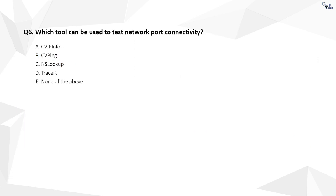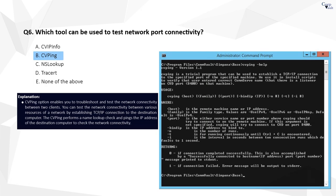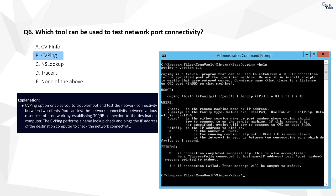Question 6. The correct answer is B. The CV ping utility is used to ping an IP address using a specific port.